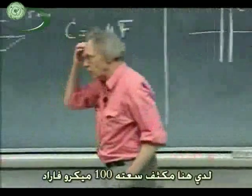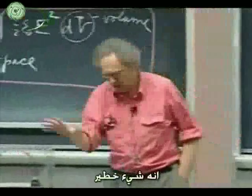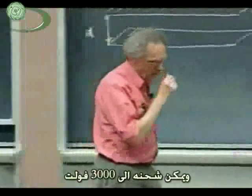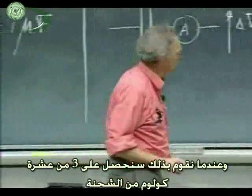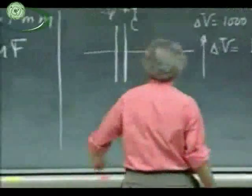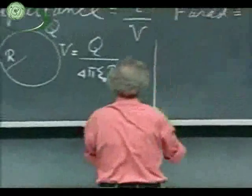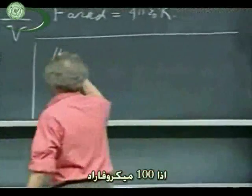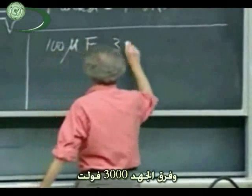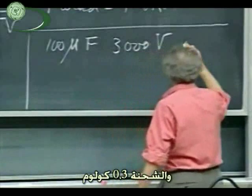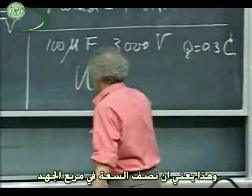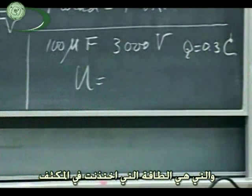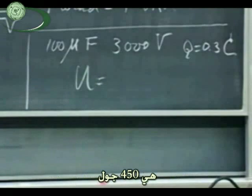I have here a 100-microfarad capacitor — it's a dangerous one. We can charge that up to 3,000 volts, and when we do that we get three-tenths of a coulomb of charge on that capacitor. It is 100 microfarads; I'm going to put a potential difference of 3,000 volts over it, giving it a charge Q. That means one-half CV squared — the energy stored in the capacitor — is 450 joules.